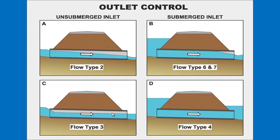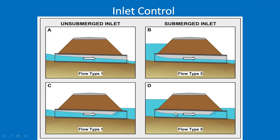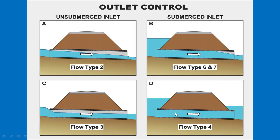The outlet control diagrams cover types 6 and 7 — which are basically the same, one being mostly full and one partly full — along with types 2, 3, and 4. These diagrams from HDS 5 illustrate all the different outlet control scenarios described in the flow type chart.